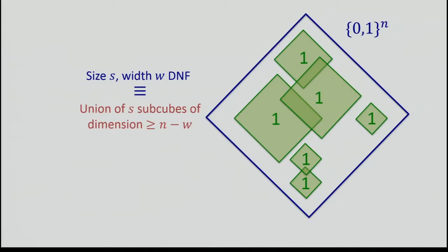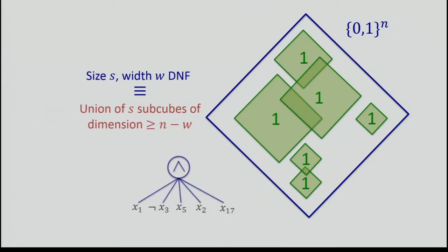In this talk it may be useful to visualize a DNF as the union of subcubes. In particular, a size-S width-W DNF is the union of S subcubes of dimension at least N minus W. Every term corresponds to a subcube. One thing to emphasize: a term of small width corresponds to a cube of large dimension. I'll switch back and forth between viewing a DNF as a circuit and as the union of subcubes.